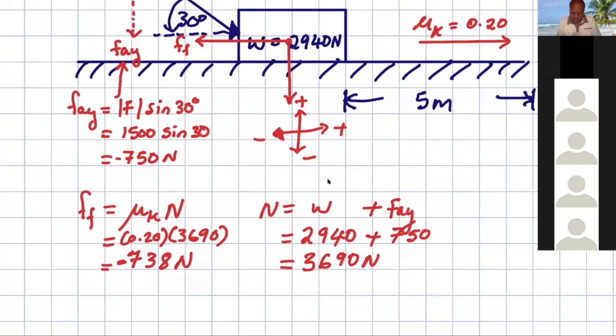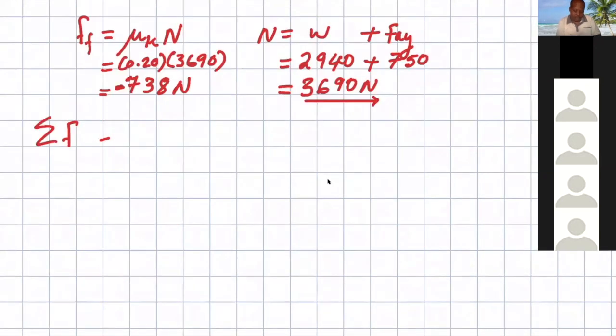You see the answer has to be negative because it is in the negative x direction. The normal force is upwards, so it is positive. Fay was negative because it is down.